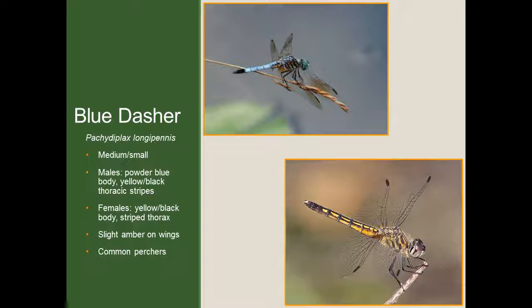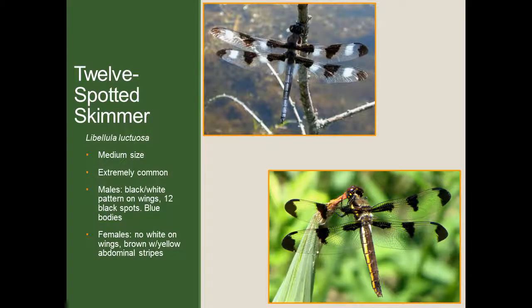After that, we have the 12-spotted skimmer. These are a little bit larger in size, comparable to the eastern pond hawk, and extremely common, especially by ponds and lakes. The males have alternating black and white patterns on the wings — overall 12 black spots, which is where they get the name — and have bluish-black bodies. Females don't have any white on the wings, but they still do have those 12 black spots. In terms of body coloration, they're a fairly drab brown with lateral yellow stripes on the abdomen.